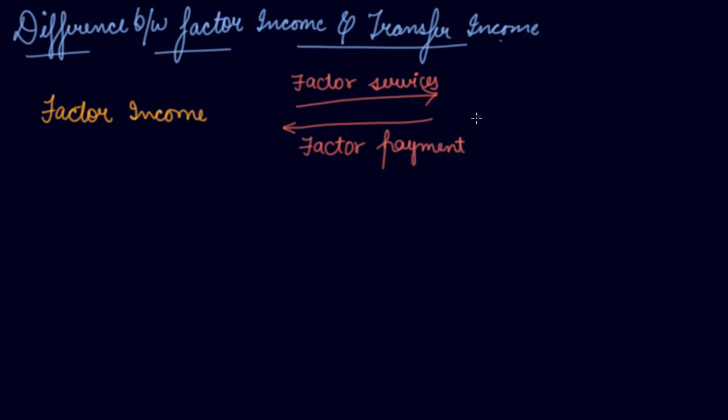Households, or owners of land, labor, capital, and entrepreneur, give the factor services to the producer. The producer will give in return some factor payment. So it is a two-way flow. Factor incomes are the income received by the owner of the factor of production for rendering their factor services to the producers.